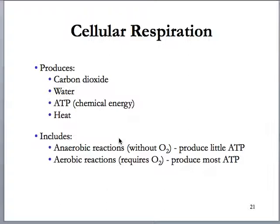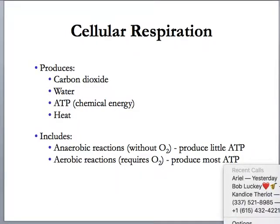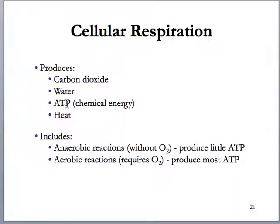Cellular respiration — all of the reactions that take place in those three steps — will produce carbon dioxide as a waste product. Carbon dioxide has to eventually make its way through the blood to the lungs to be exhaled. It will also produce water and heat, because energy transfer is never 100%, so a lot of that energy being transferred from the bonds of glucose into the bonds of ATP will be lost as heat. Our main product, which we're most concerned with, is ATP energy — the chemical energy the cell needs to drive all metabolic processes.